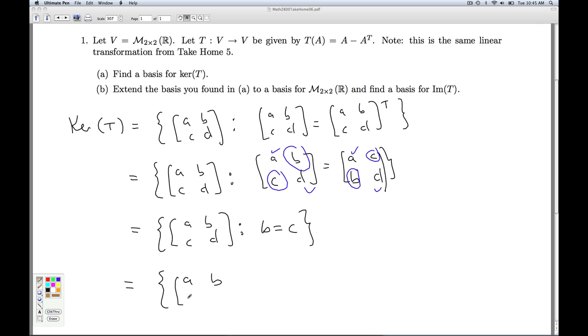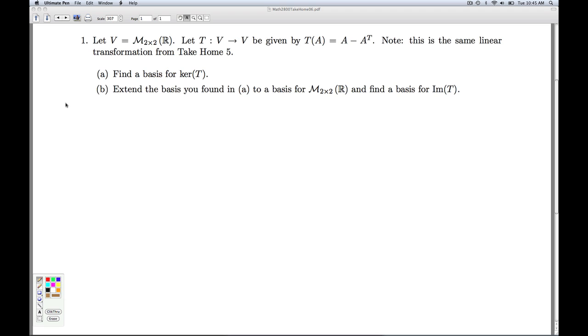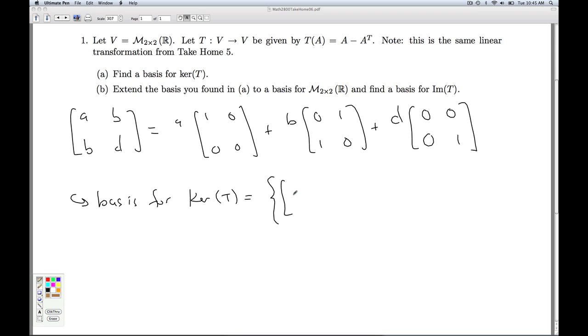So now this gives me the set ABBD. If I take ABBD and break that up in terms of the standard basis, I have A times this vector plus B times this vector plus D times this vector. Clearly, these three vectors are linearly independent. So that means a basis for the kernel of T is [1,0,0,0], [0,1,1,0], [0,0,0,1]. So we have a three-dimensional kernel. That will do it for part A.